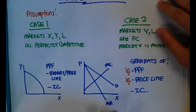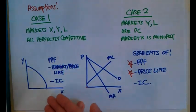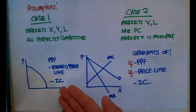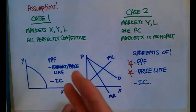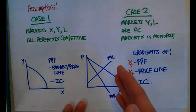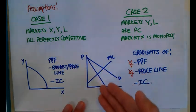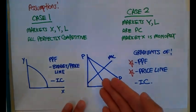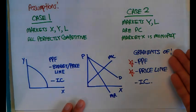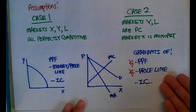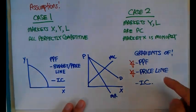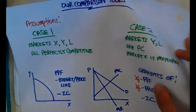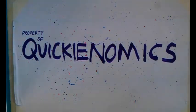The tools we will need are: how to draw the PPF, how to place the price line (budget line), and how to place the indifference curve. The PPF behaves like your budget constraint from chapter two. We also need a price-versus-quantity graph to analyze how a monopoly and a competitive firm behave differently. Most importantly, we need to know how to calculate the gradients of the PPF and the price line.